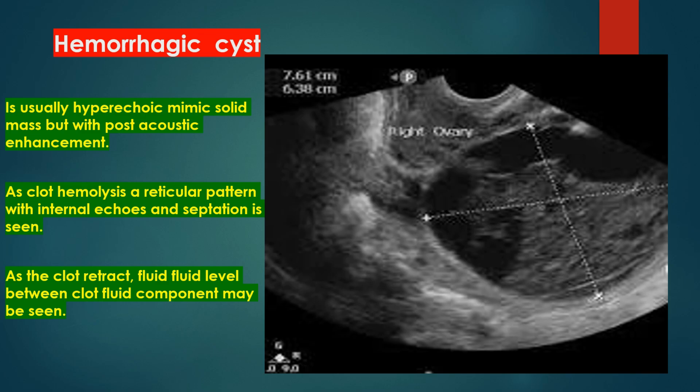Hemorrhagic cysts are usually hyperechoic and can mimic a solid mass, but with posterior acoustic enhancement. As clot hemolysis occurs, a reticular pattern with internal echoes and septation is seen. As the clot retracts, a fluid-fluid level between clot and fluid components may be seen.